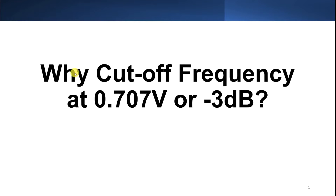Hi everyone. This video is to show you why cutoff frequency always shows at 0.707V or negative 3dB. If you design a low pass filter or power divider, you will always need to focus the cutoff frequency at negative 3dB or 0.707V.